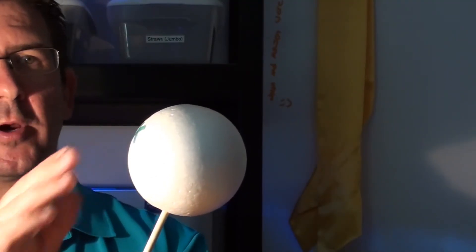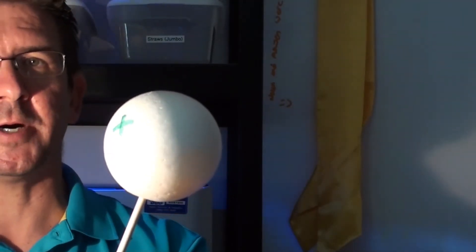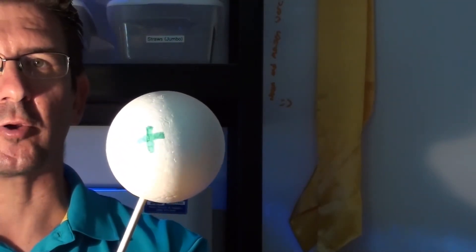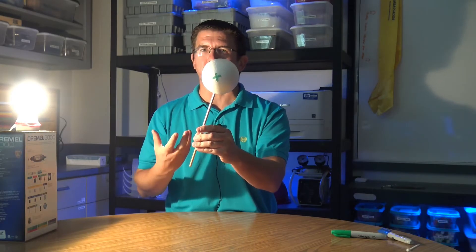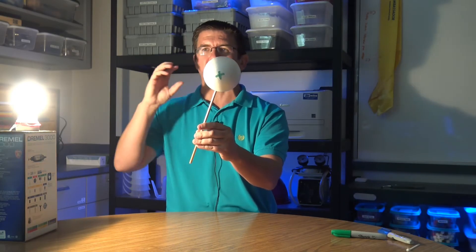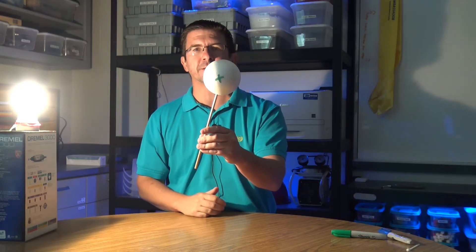So if we take our X right here and we rotate the ball, we can see that as the Earth rotates, now we're moving into night. And that's the reason on Earth, it doesn't just instantly go from really bright daylight to night.